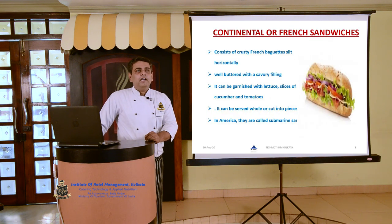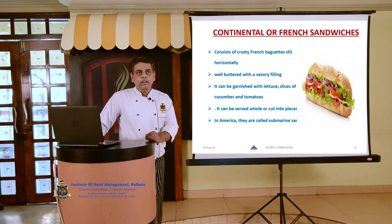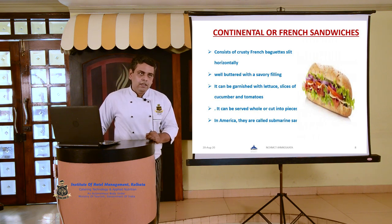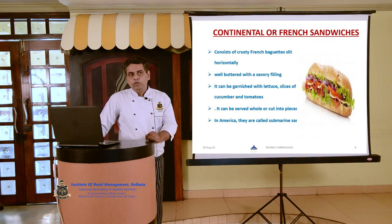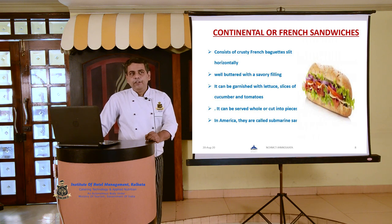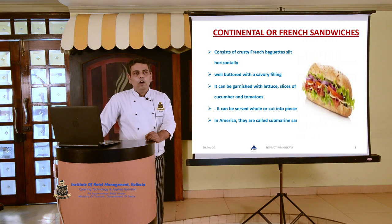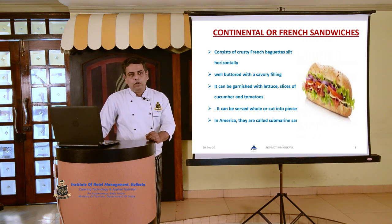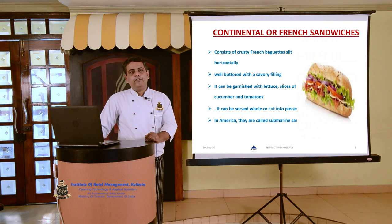Next is the continental or French sandwich. This variety of sandwiches are made with the famous crusty French bread known as French baguettes. The whole bread is slit in half horizontally, then smeared with butter and filled with different varieties of savory filling. It can be served whole or cut into half for easy handling. When served whole, the sandwich is known as foot long. In America, this variety is also known as submarine sandwich.